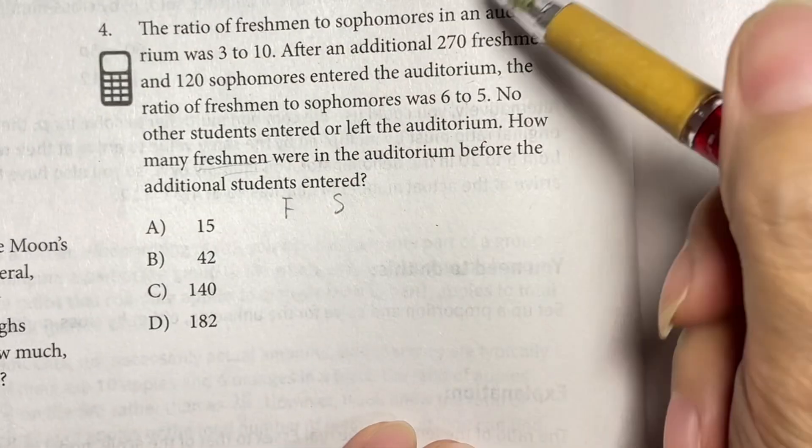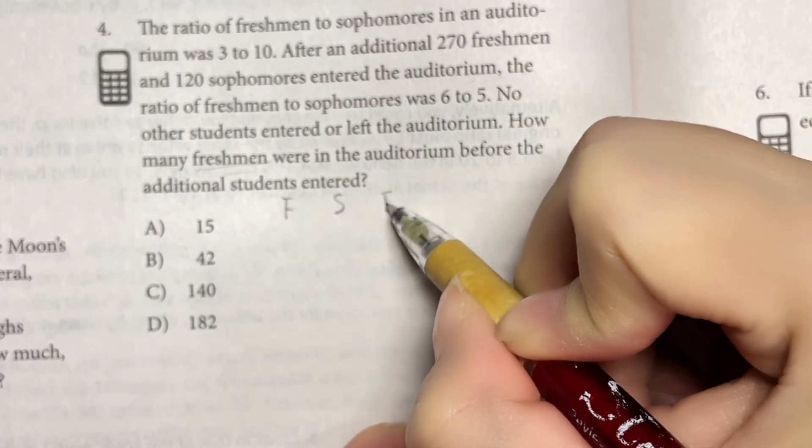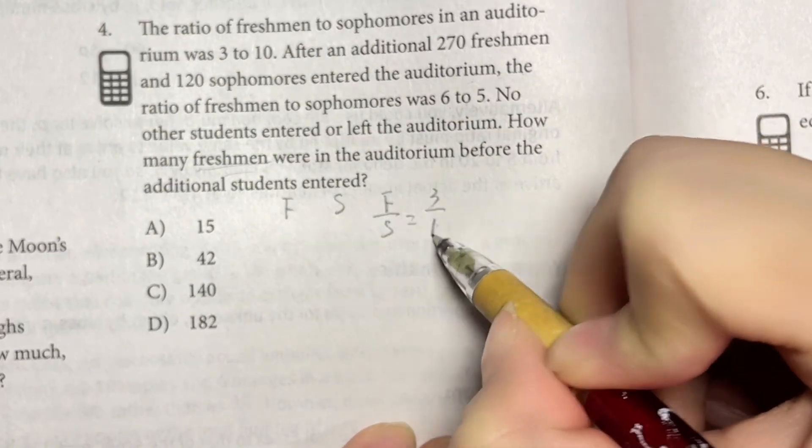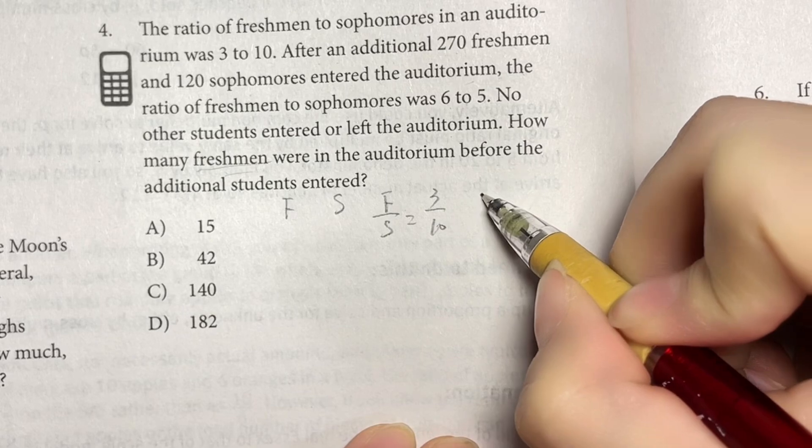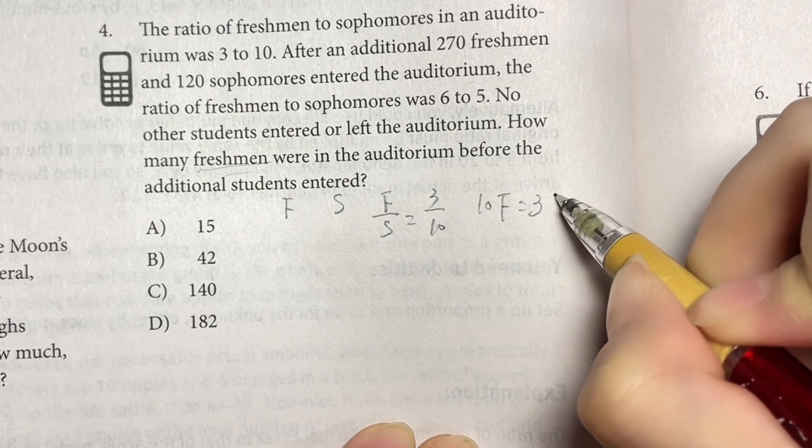So the ratio of freshmen to sophomores is F to S is 3 to 10. So we can write this: 10F equals 3S.